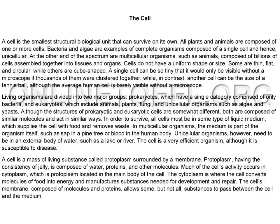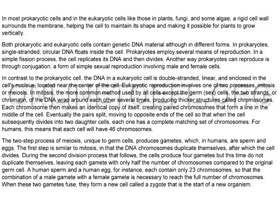The cell's membrane, composed of molecules and proteins, allows some, but not all, substances to pass between the cell and the medium. In most prokaryotic cells, and in eukaryotic cells like those in plants, fungi, and some algae, a rigid cell wall surrounds the membrane, helping the cell to maintain its shape and making it possible for plants to grow vertically.